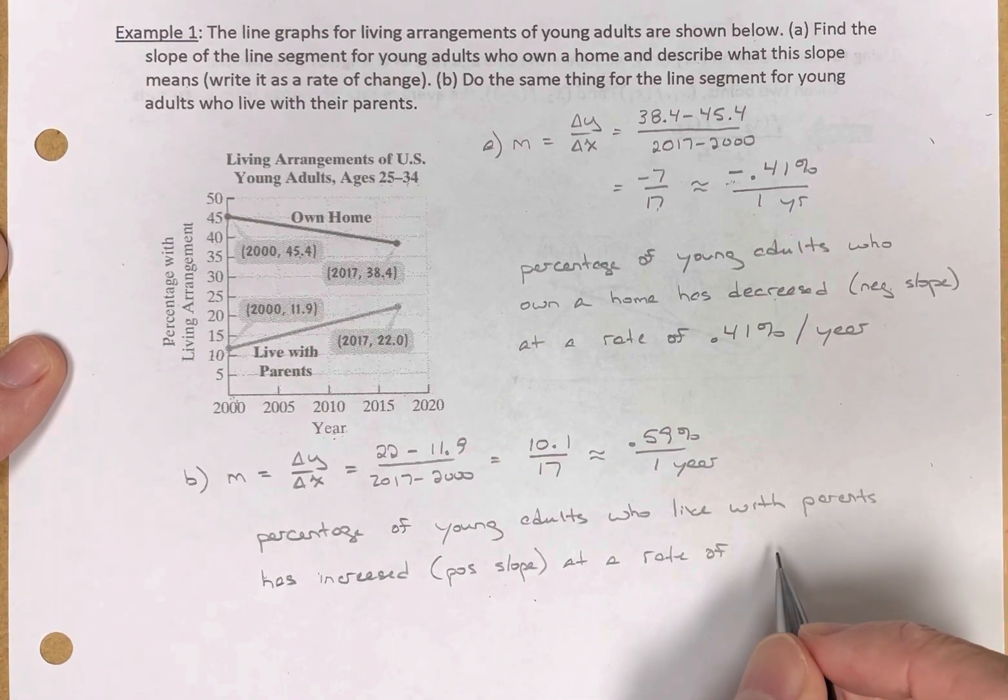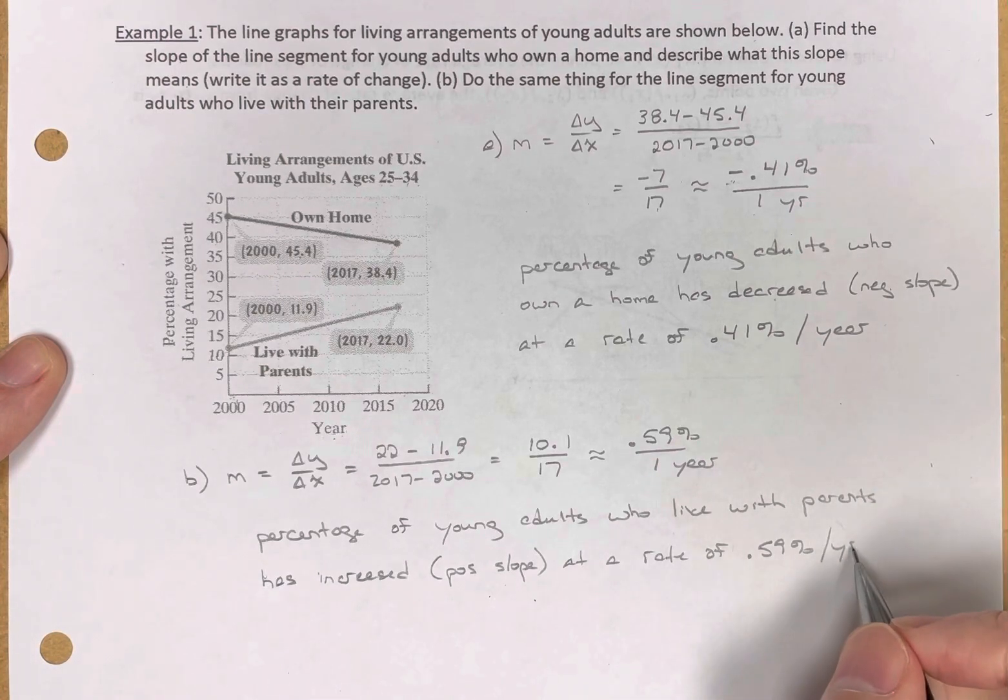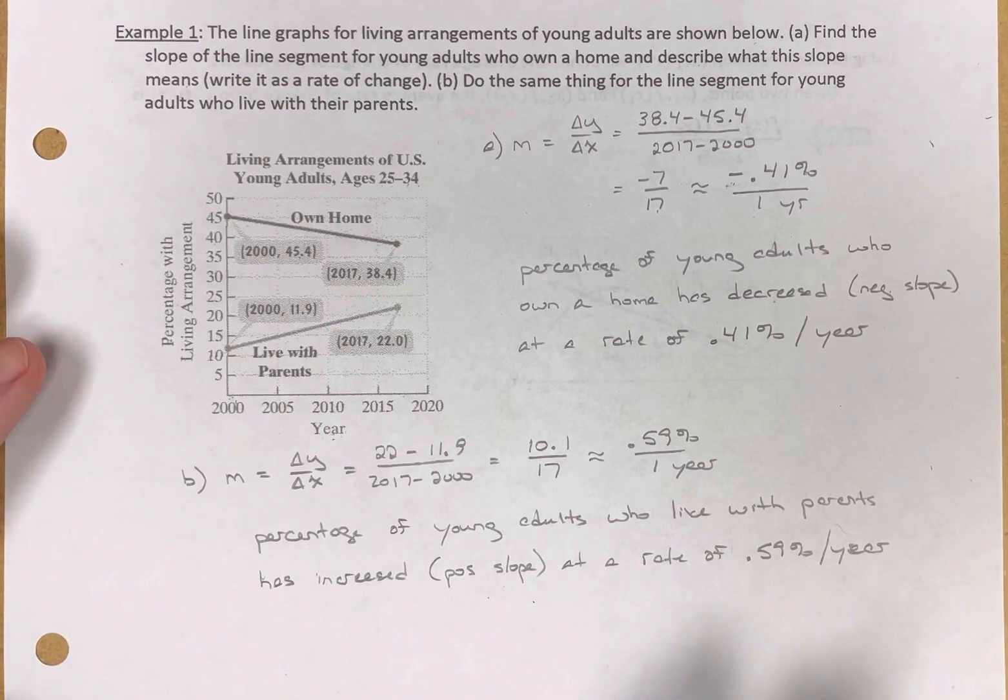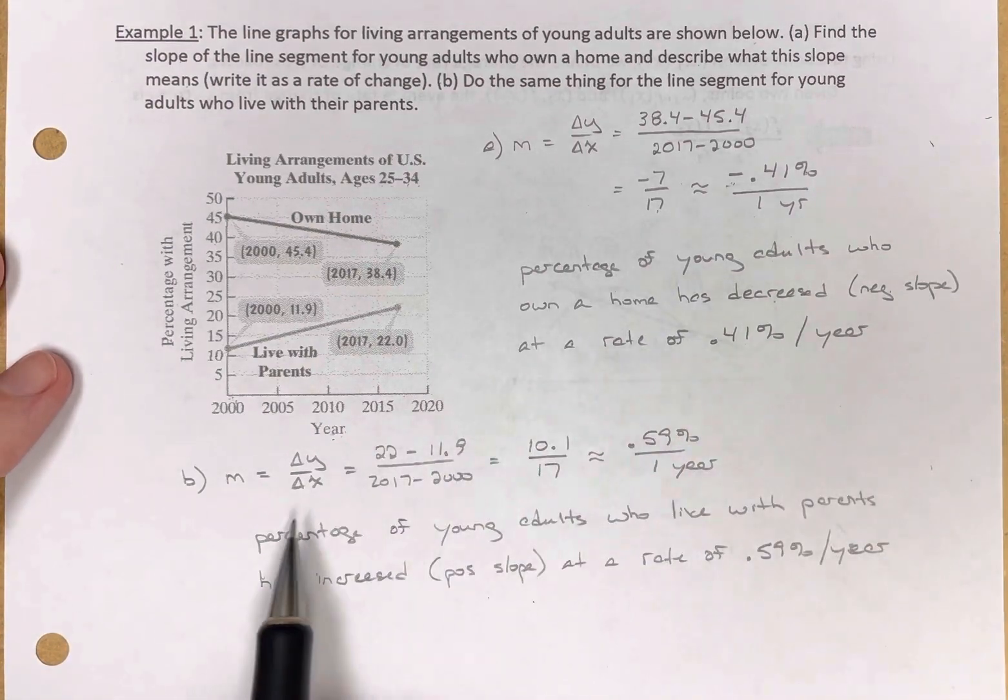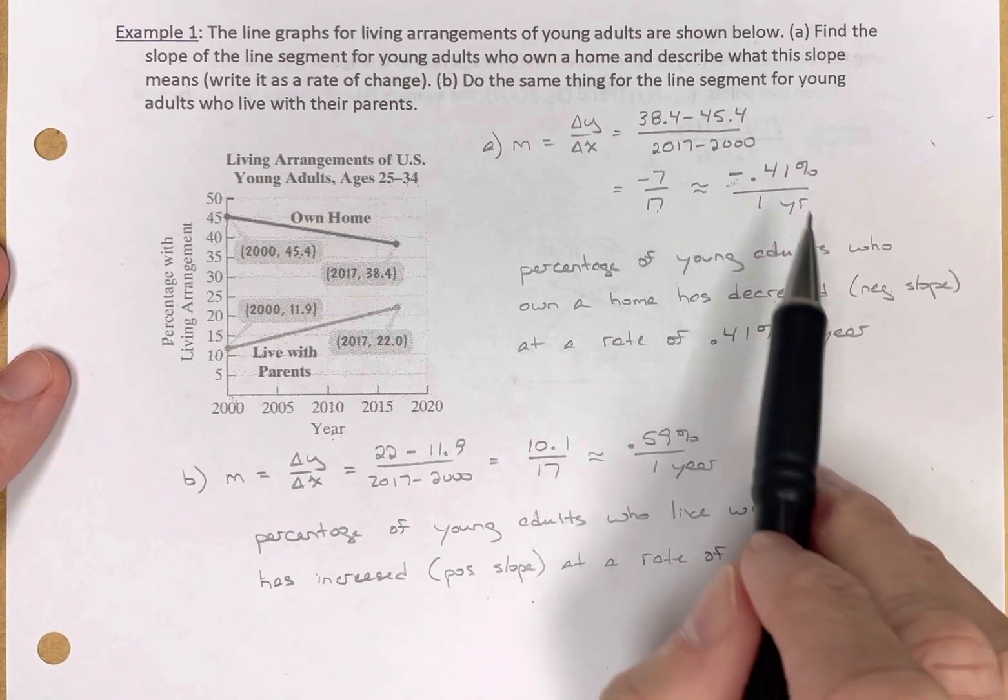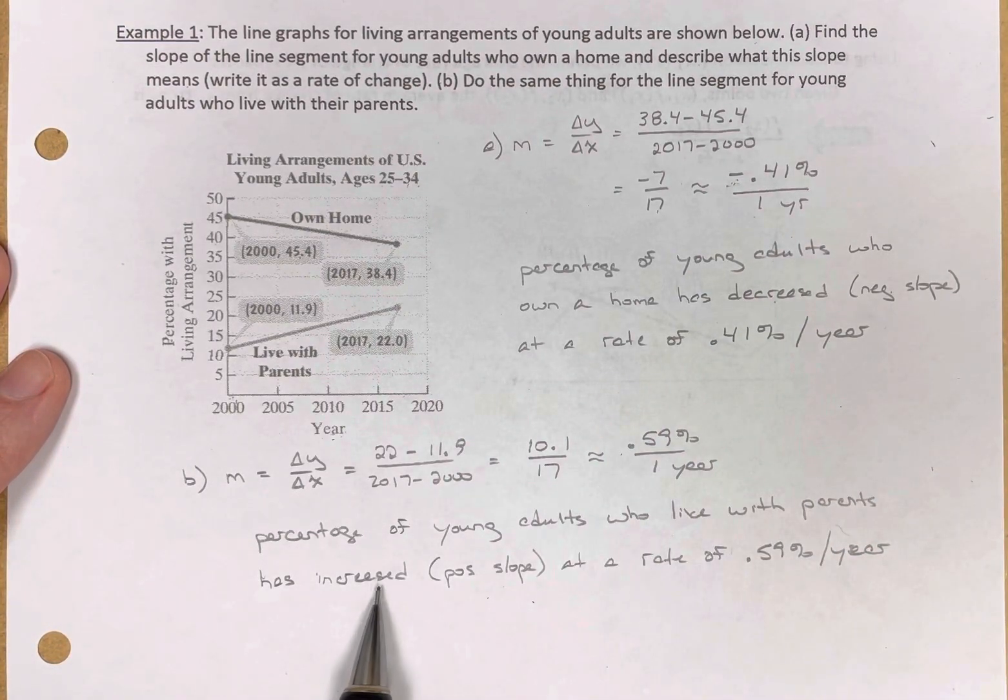It's increased at a rate of 0.59% per one year, per year. So notice the language here. We have a lot of the same words. What we changed was, if there's a negative slope, we use decreased. And there's a positive slope, we used increase.